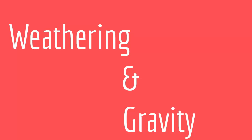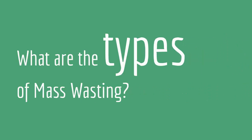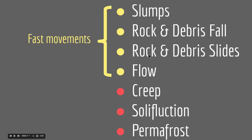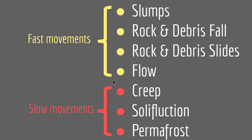Weathering has to affect rocks, soil, and materials generally in order to break them into parts for the force of gravity to eventually act on them and move them downslope. The types of mass wasting include slumps, rock and debris falls, rock and debris slides, flows, creeps, solifluction, and permafrost. The fast-moving types include slumps, falls, slides, and flows. Creeps, solifluction, and permafrost represent slow movement of rock materials. Either you have a fast movement or a slow movement of material downslope under the influence of gravity. We will talk about each of these in later lectures.